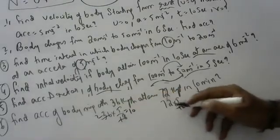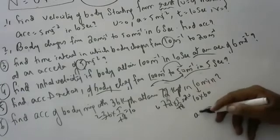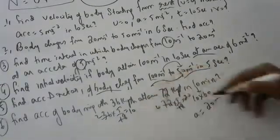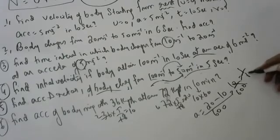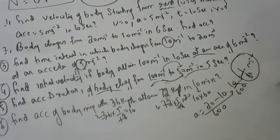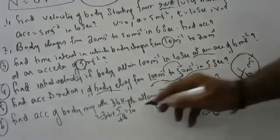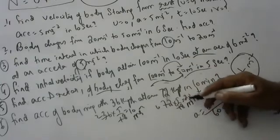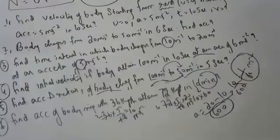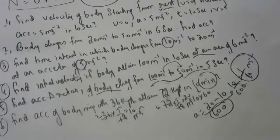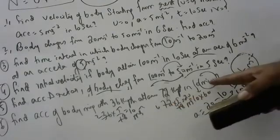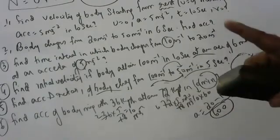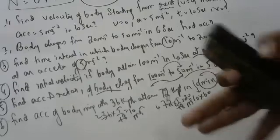A body has initial velocity 10 meters per second and final velocity 22 meters per second. We need to find the acceleration. Note: if time is given in minutes, you must convert to seconds first, because velocity is in meters per second. Convert minutes to seconds before substituting, otherwise you cannot compute acceleration correctly.